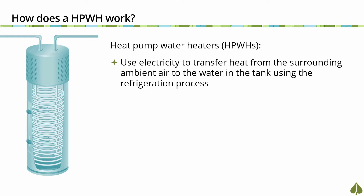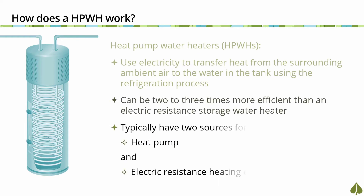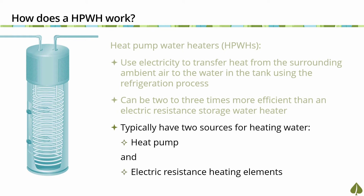This process for heating water can be two to three times more efficient than a similar electric resistance water heater. Typically, water heaters contain two sources for heating water: a heat pump and electric resistance heating elements. The heating source, which includes components such as a compressor, evaporator, and fan, are generally located at the top of the unit, while some units may have these components located separately outdoors with a tank located indoors.